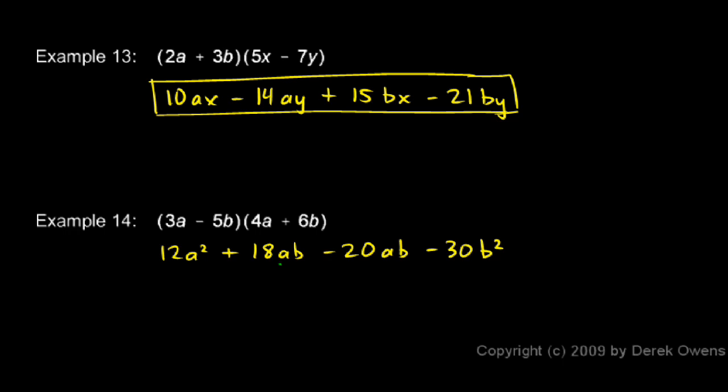And we have two terms here, so those can be combined. We'll keep our 12a squared. And 18ab minus 20ab works out to negative 2ab. And then we still have the minus 30b squared. But that's our answer: 12a squared minus 2ab minus 30b squared.